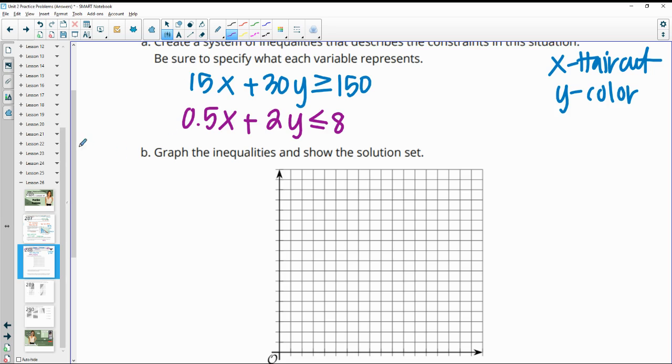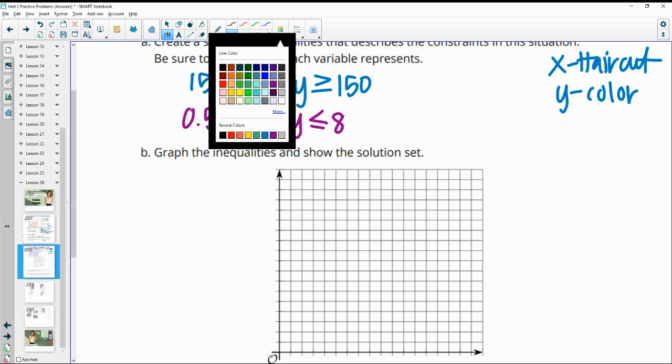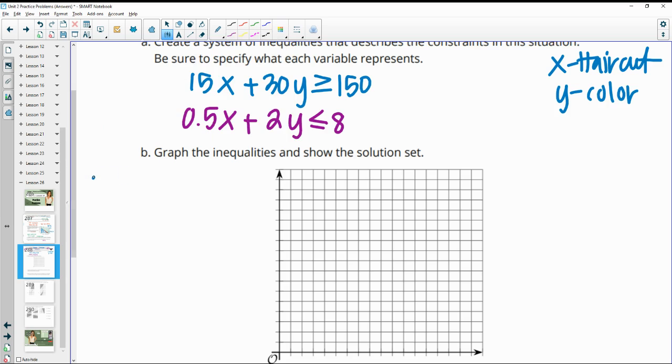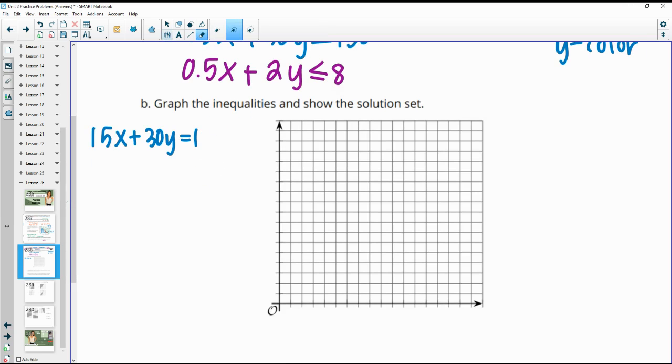So then we need to graph these. And so I'm just going to take this one and graph the equation first. So I'm going to ignore the inequality for a second. And so if she only did haircuts, that would be $15 equals $150. So we would divide by $15. So if she was only doing haircuts, she would need to do 10 of them. And so we'd go 1, 2, 3, 4, 5, 6, 7, 8, 9, 10 if she was doing haircuts only.